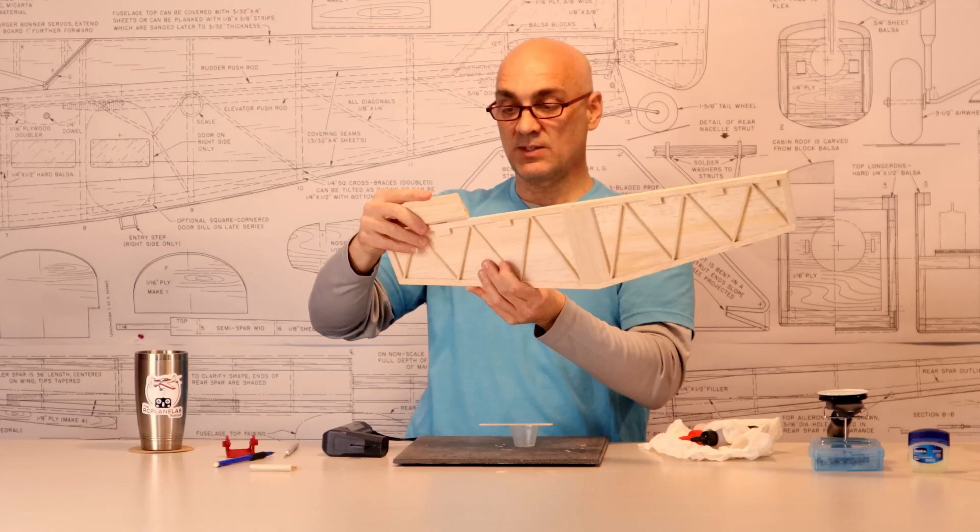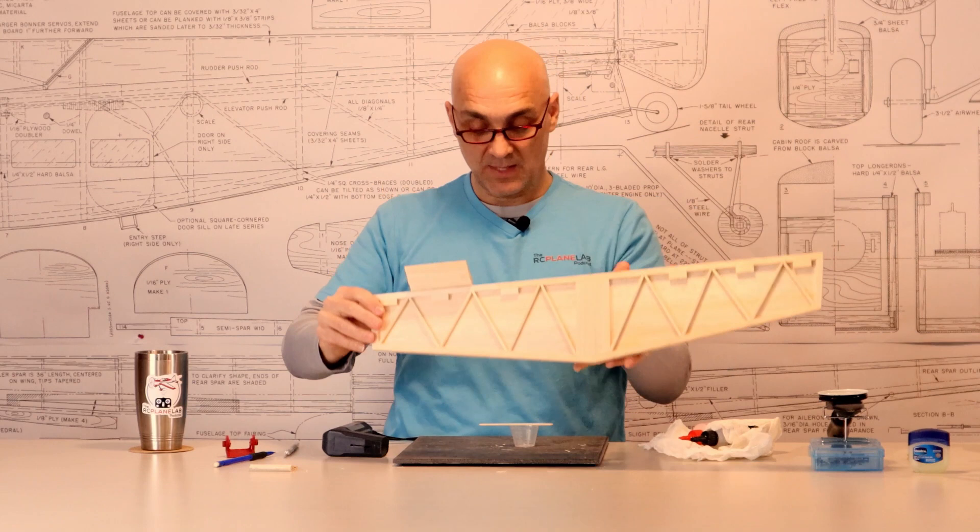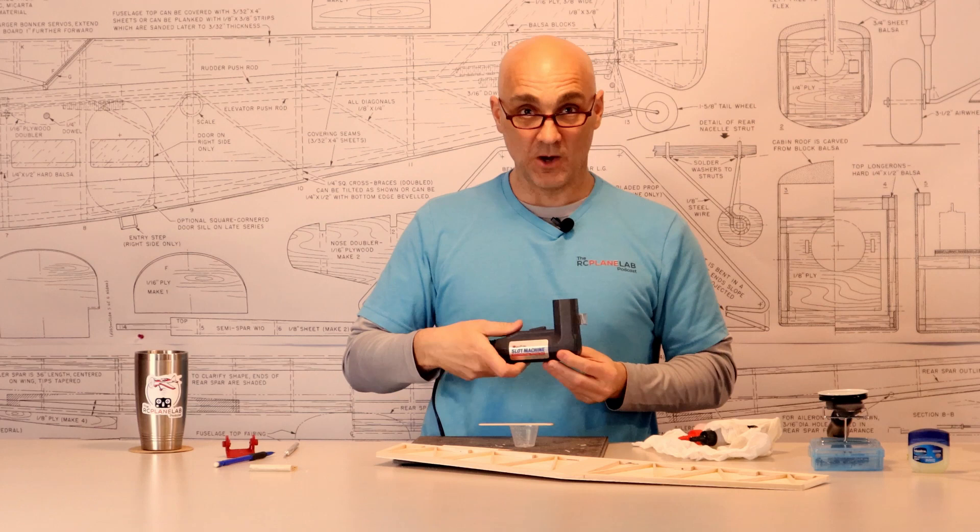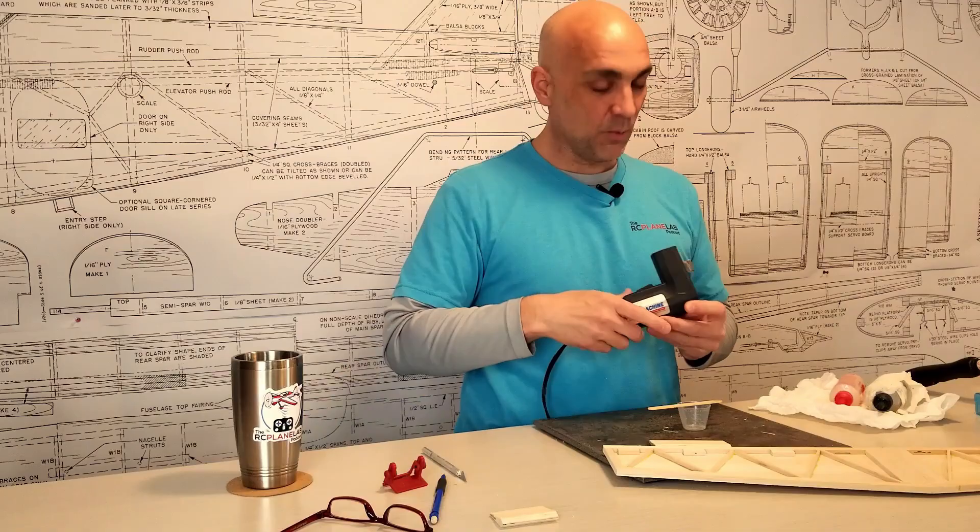So anyway, that's how I cut a hinge pocket for a Dubro pinned hinge with this awesome tool, the Great Plane Slot Machine Automatic Hinge Cutting Tool. Hope you learned something. Hope it wasn't too boring. Thanks for watching.